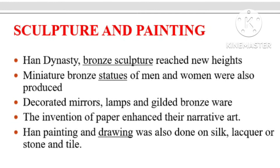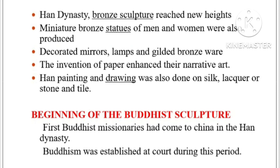Han Dynasty bronze sculptures reached new heights. Miniature bronze statues of men and women were also produced, along with decorated mirrors, lamps, and gilded bronze ware — utensils made from bronze. The invention of paper greatly enhanced their narrative art. Han painting and drawing was also done on silk, lacquer, stone, and tile. Before paper was invented, painting and drawing were carried out on silk cloth, lacquer, stone, and tile.